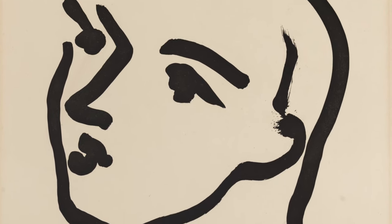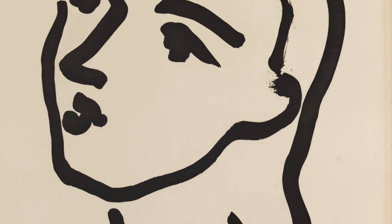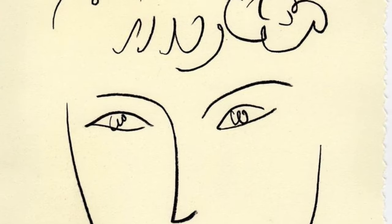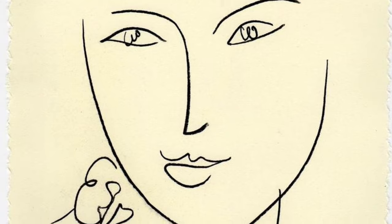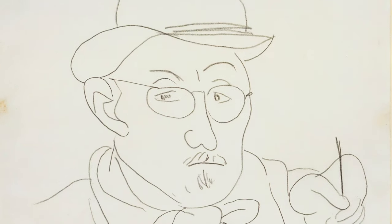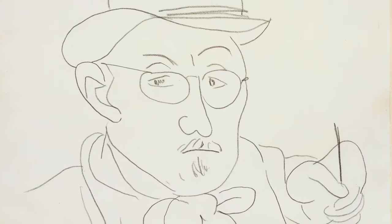Henri Matisse was a French artist, famous for his use of color and original line portraits. Even though the sketches look simple, he spent a lot of time studying each person he drew.